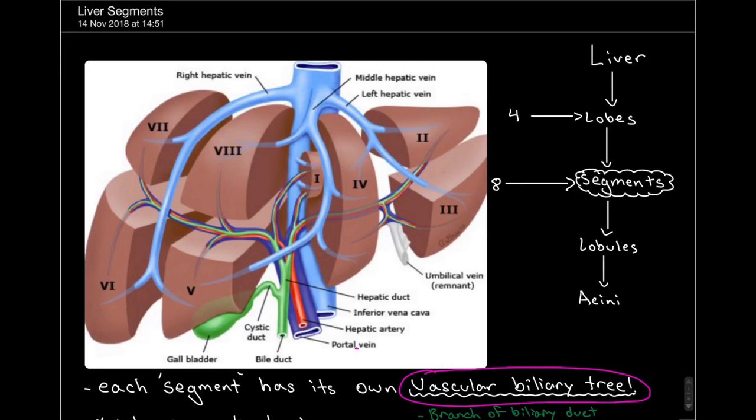What's important to know is the liver is subdivided into lobes, segments, lobules and then asini.